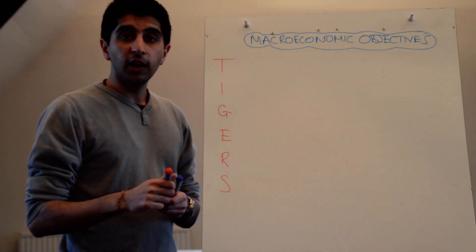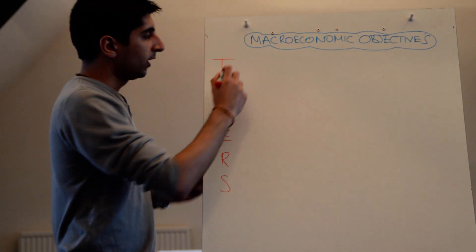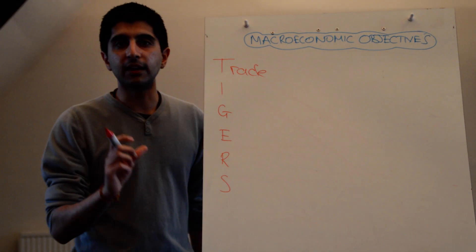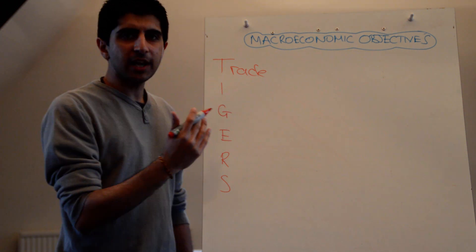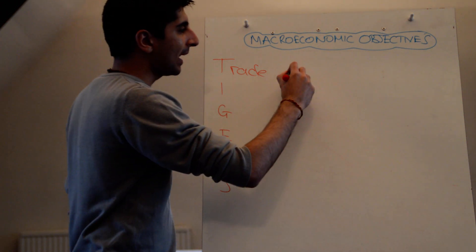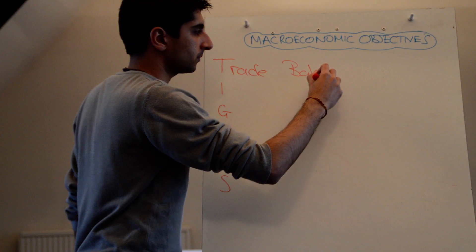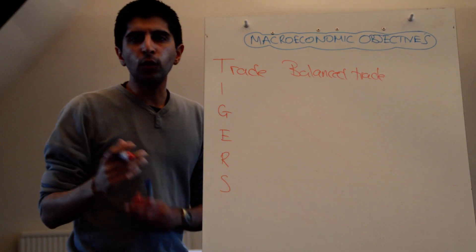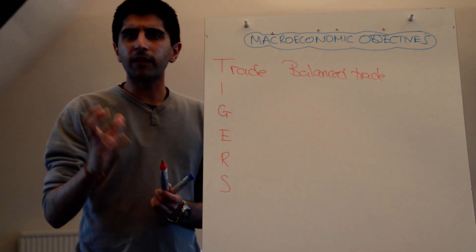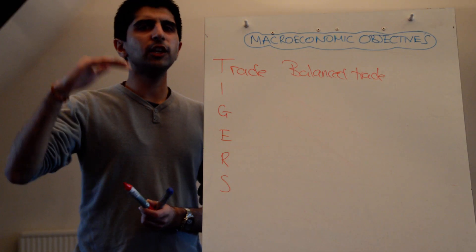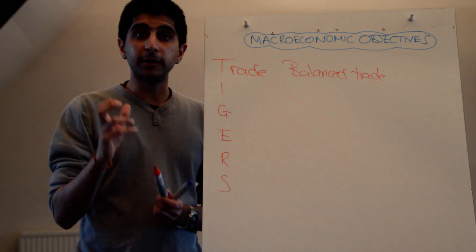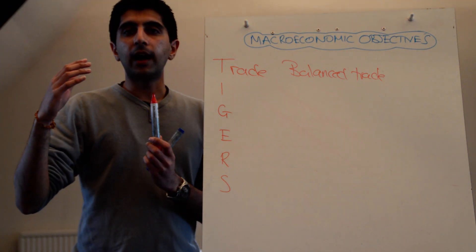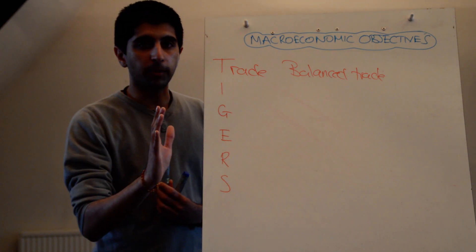Let's work through TIGERS. First of all, T — the government always looks at trade performance. Trade is fundamental. And what's the objective? The objective is for balanced trade. Not having a huge deficit, and not having a huge surplus either. Balance between imports and exports, between revenue leaving the country and revenue entering the country.